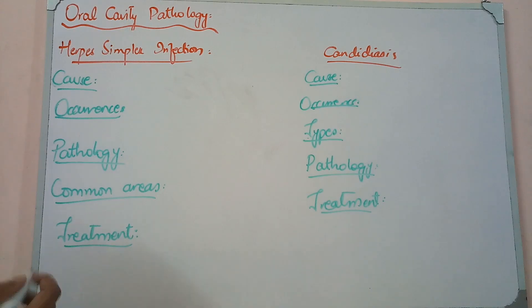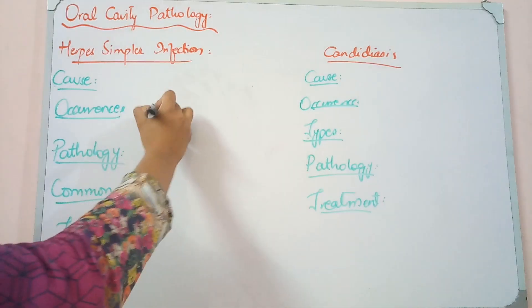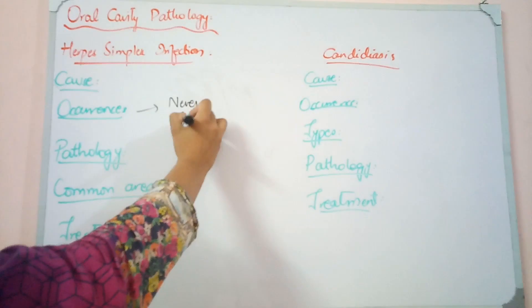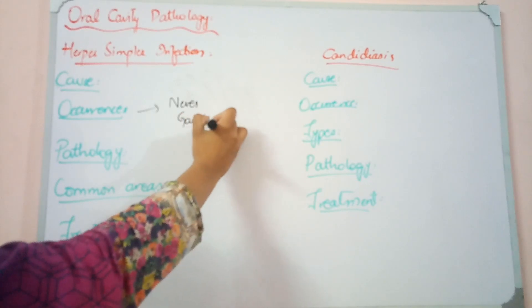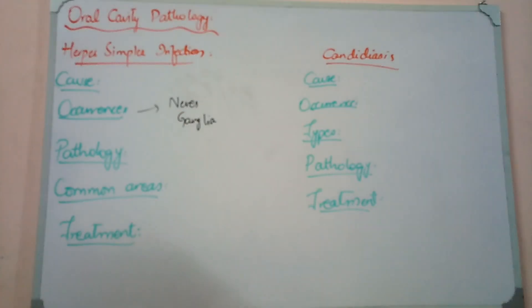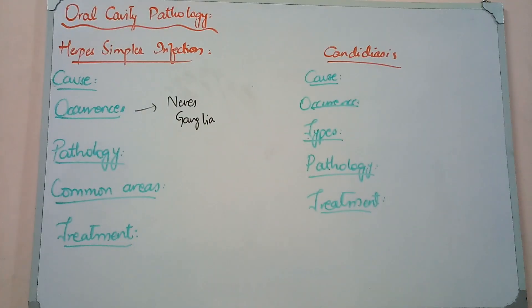After the primary infection resolves in about 10–12 days, the virus settles in our nerves and ganglia. When triggering conditions arise, it will reappear as recurrent infection — often as mouth sores.